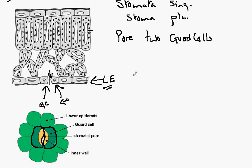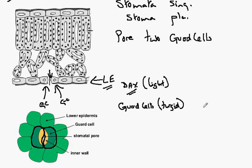In general terms, during the day when there is light, the guard cells become turgid and the pore is open. It is open for gas exchange.